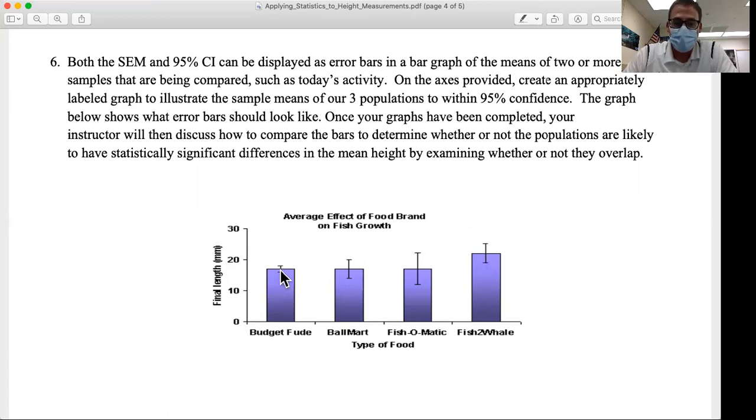In this case, the budget food 95% confidence interval does not overlap with the Fish-to-Whale 95% confidence interval. So I can say there is a statistically significant difference in the effect of budget food versus Fish-to-Whale food on the final length of the fish we fed them to.